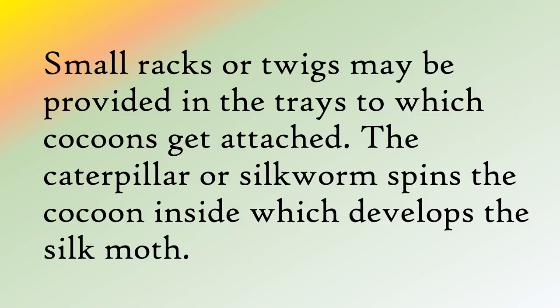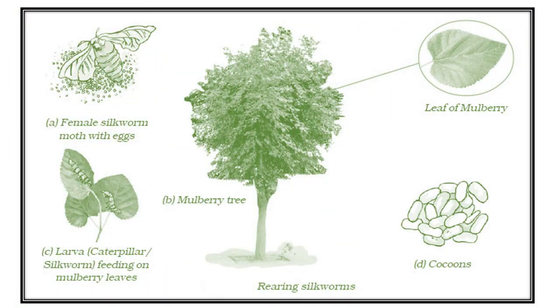The worms are kept in clean bamboo trays along with freshly chopped mulberry leaves. After 25 to 30 days, the caterpillars stop eating and move to a tiny chamber of bamboo in the tray to spin cocoons. Small rags or twigs may be provided in the tray to which cocoons get attached. The caterpillar, or silkworm, spins the cocoon inside which develops the silk moth. To summarize rearing silkworms: (A) female silkworm moth with eggs, (B) mulberry tree, (C) larvae feeding on mulberry leaves, and (D) cocoons.